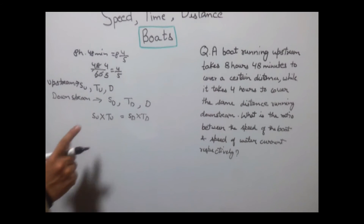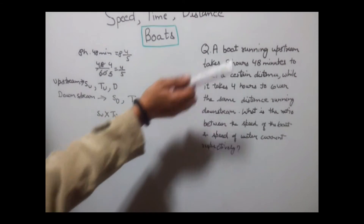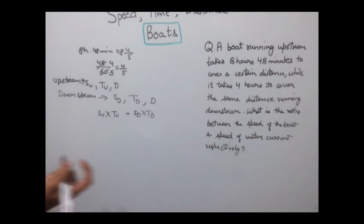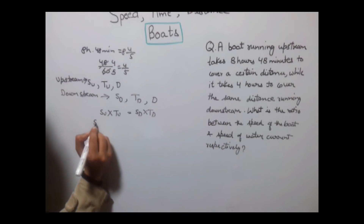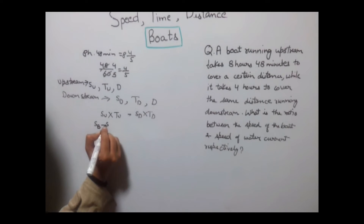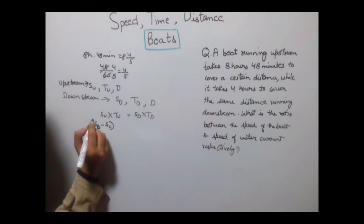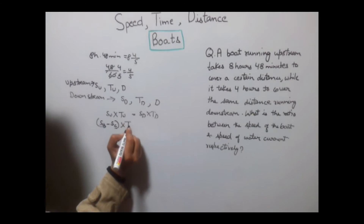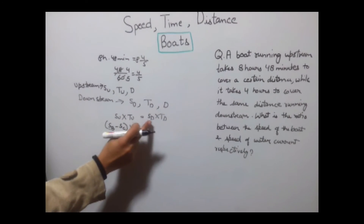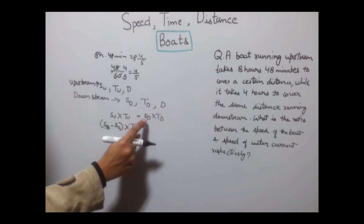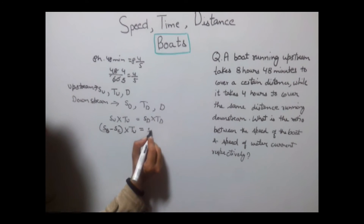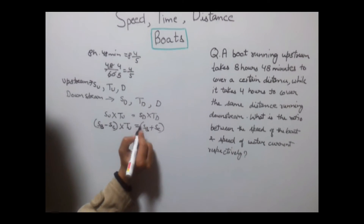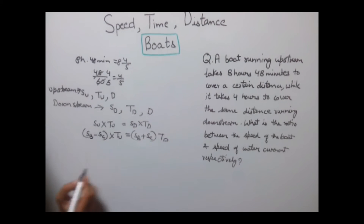Since distance is equal for both: SU × TU = SD × TD. Speed of upstream is speed of boat minus speed of water (against direction), and speed of downstream is speed of boat plus speed of current (same direction).